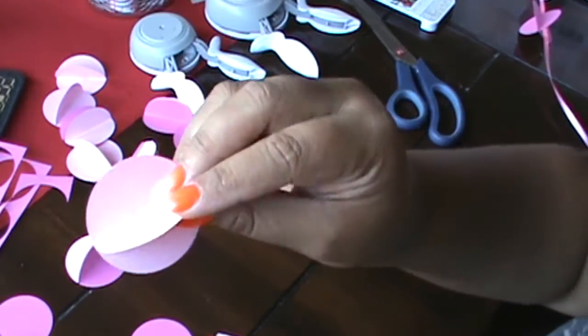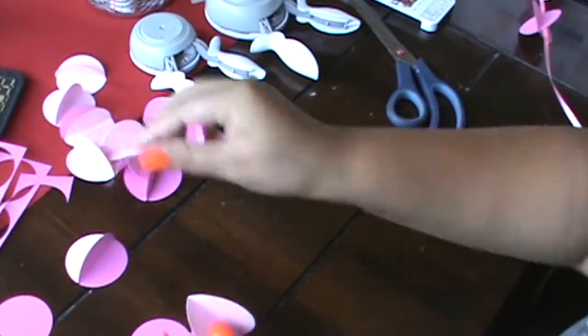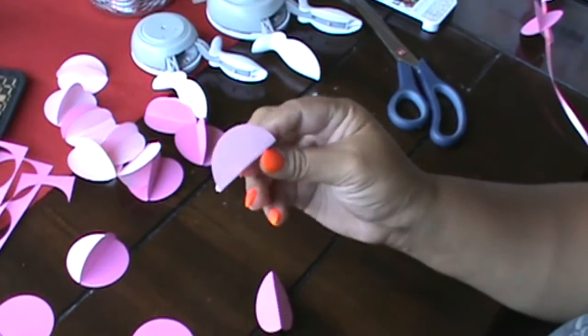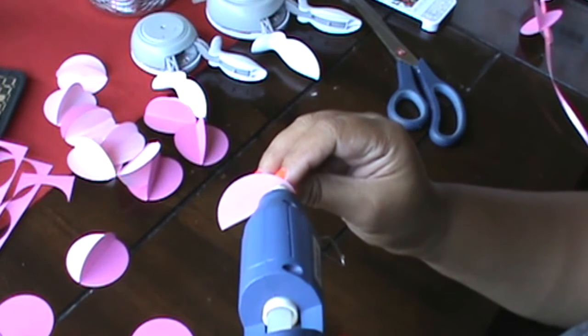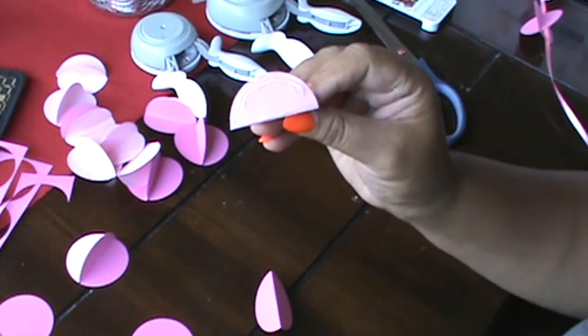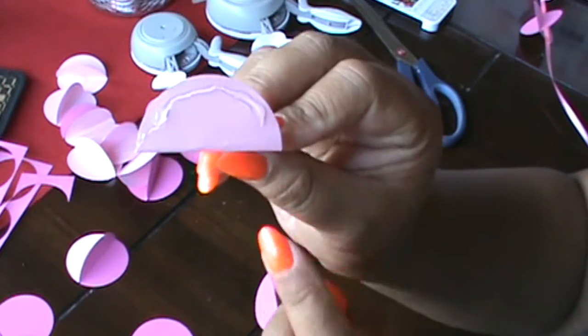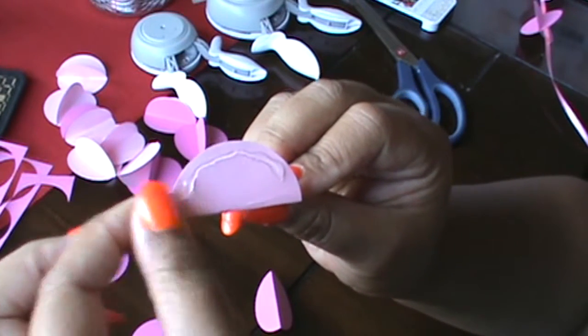So you're gonna take two tacos, you're gonna glue one of the ends together, and I'm gonna show you right here. You're not gonna glue it completely shut, you just want to do the half moon. Just that one part, I'm gonna show it to you closer.